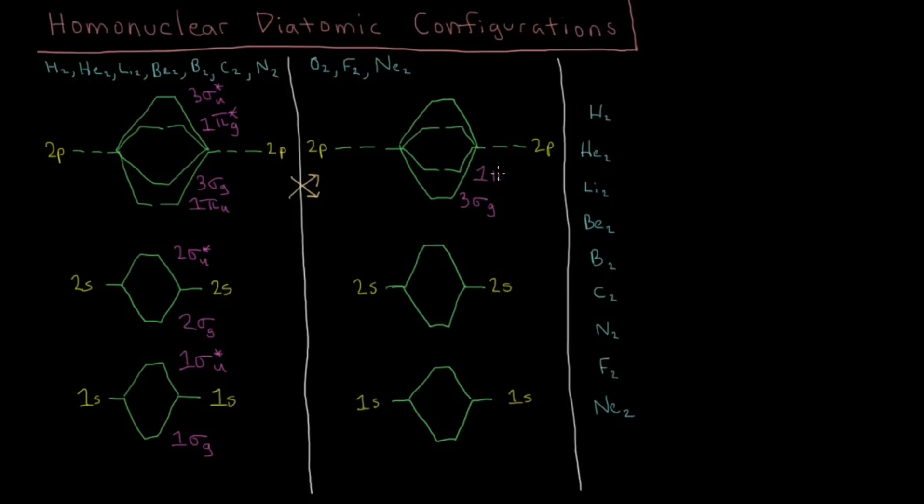So when you see this type of diagram, you're going to see two different forms of this based off of whether we're talking about something from hydrogen to nitrogen, or whether we're talking about oxygen, fluorine, and neon.